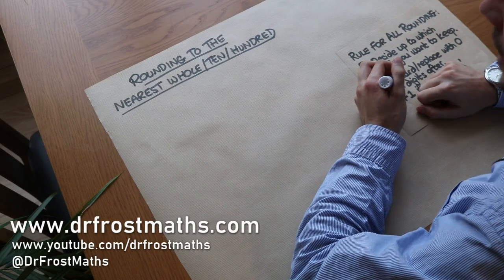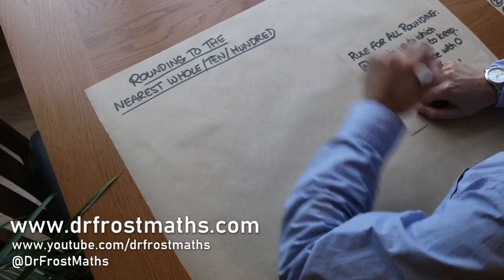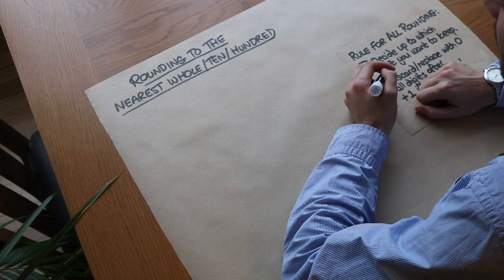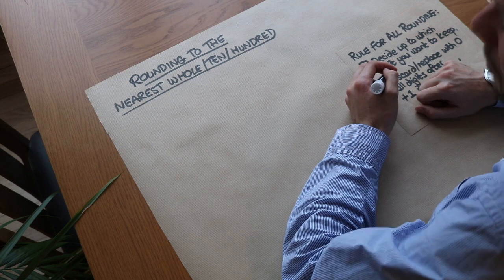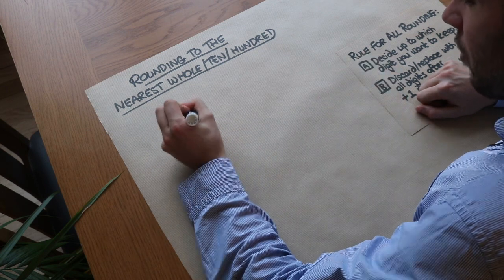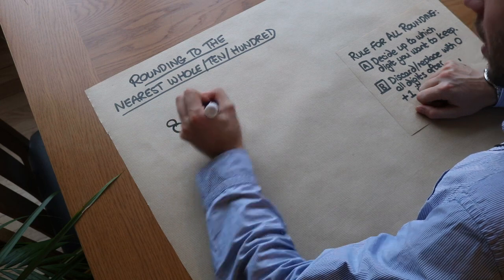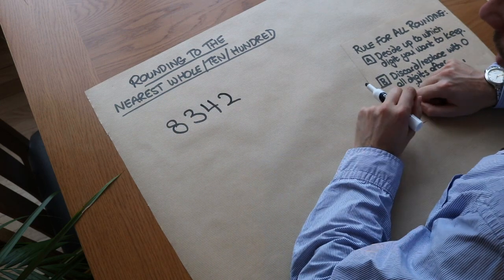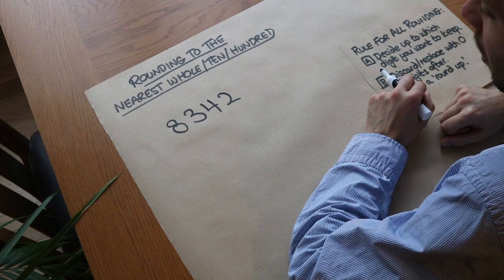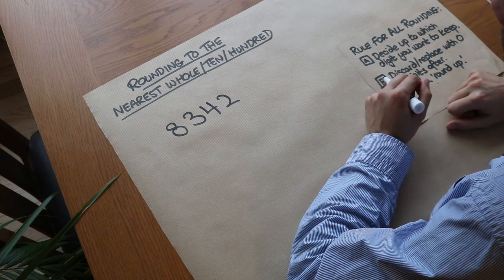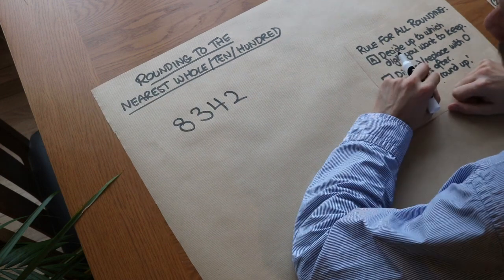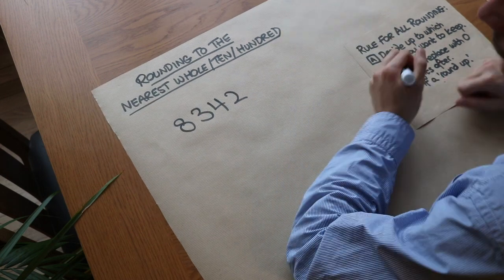Welcome to this video on rounding to the nearest whole, ten, hundred, and thousand. Let's say you put a party as a publicly listed event on Facebook, and to your horror 8,342 people end up turning up. Now if someone asked you how many people came, you wouldn't say 8,342 - it's a bit of a mouthful. You would just say 8,000 people came, or maybe even 8,300.